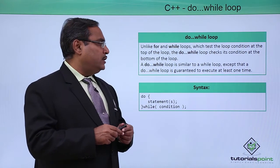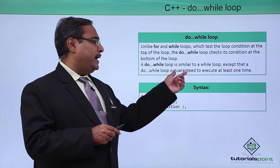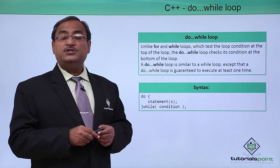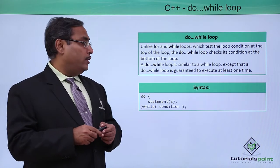A do-while loop is similar to a while loop except that a do-while loop is guaranteed to execute at least one time. That is the main difference between while and do-while loop.